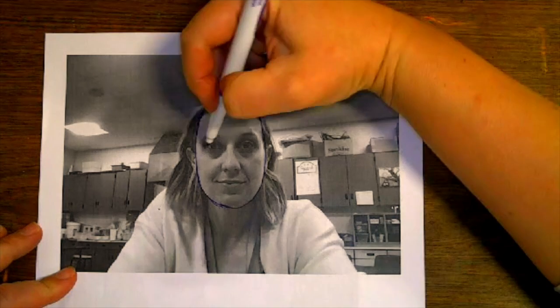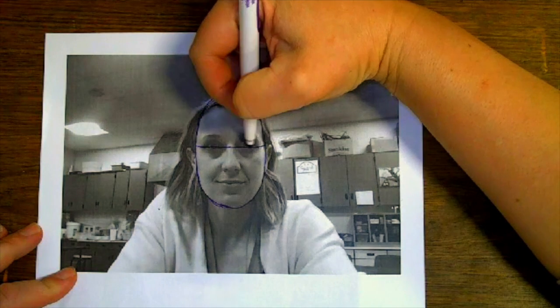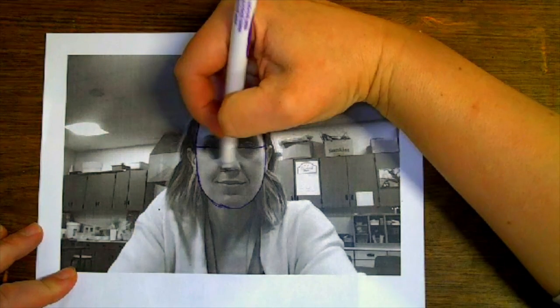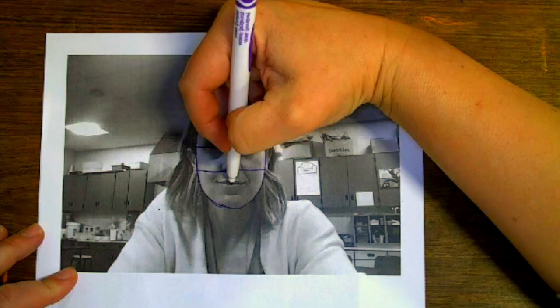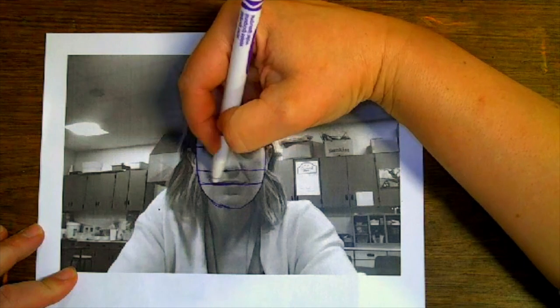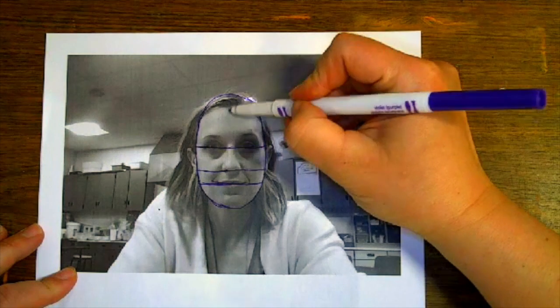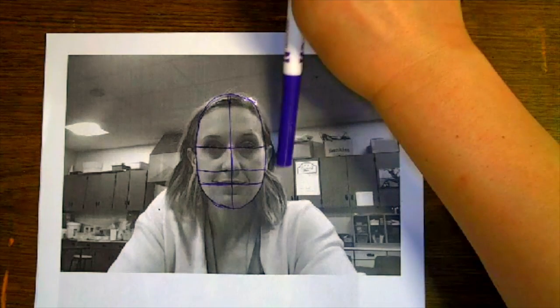Next I'm going to draw a line across the eyes here, and the bottom of the nose, and the mouth. I'm going to add in that bilateral symmetry line.